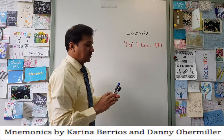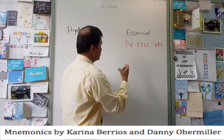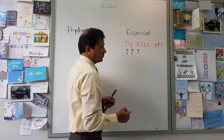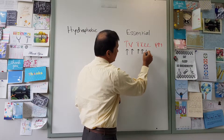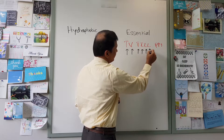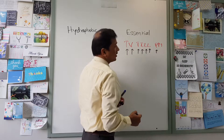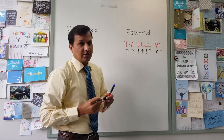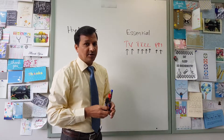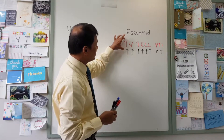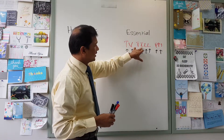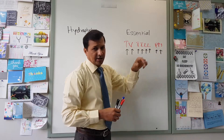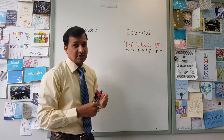So TV till PM: T for threonine, V for valine, another T for tryptophan, I for isoleucine, L for leucine, another L for lysine, P for phenylalanine, and M for methionine. So these are the essential amino acids: threonine, valine, tryptophan, isoleucine, leucine, lysine, phenylalanine, and methionine.